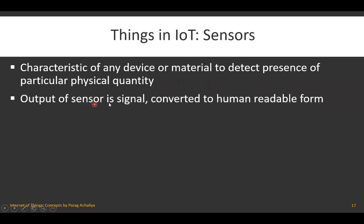The output of any sensor will be a signal, which is then converted into human-readable form. Whatever the sensor generates will be a signal, and that signal will be converted into a different form which is usually readable by human beings, because we are not able to read raw signals directly.